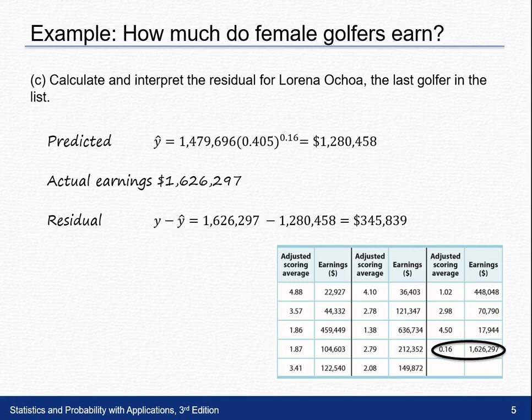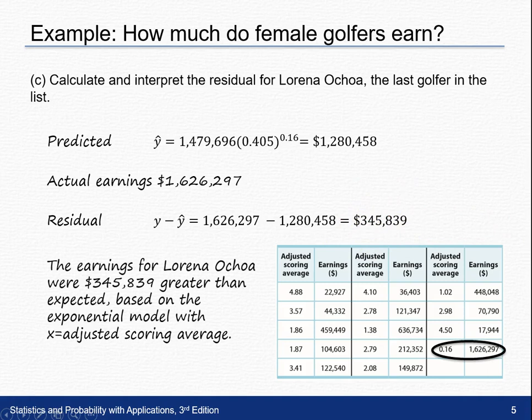She actually earned more than we expected. Her earnings were $345,839 greater than expected based on this exponential model using adjusted scoring average as x. If you'd like to practice with the exponential model, you can try exercise five in your text.